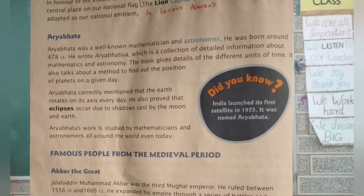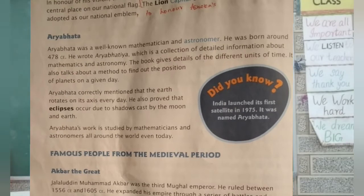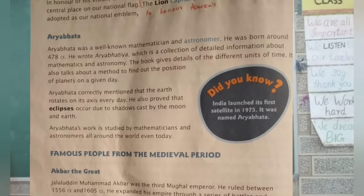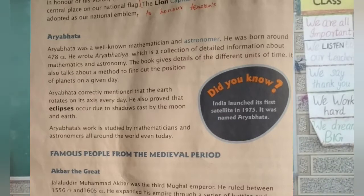Aryabhata was a well-known mathematician and astronomer. He was born around 478 CE. He wrote Aryabhatiya, which is a collection of detailed information about mathematics and astronomy. The book gives details of different units of time. It also talks about the method to find out the position of planets on a given day. Aryabhata correctly mentioned that the earth rotates on its axis every day. He also proved that eclipses occur due to shadows cast by the moon and earth. Aryabhata's work is studied by mathematicians and astronomers all around the world, even today. An astronomer means a scientist who studies the sun, moon, stars, planets, and so on.